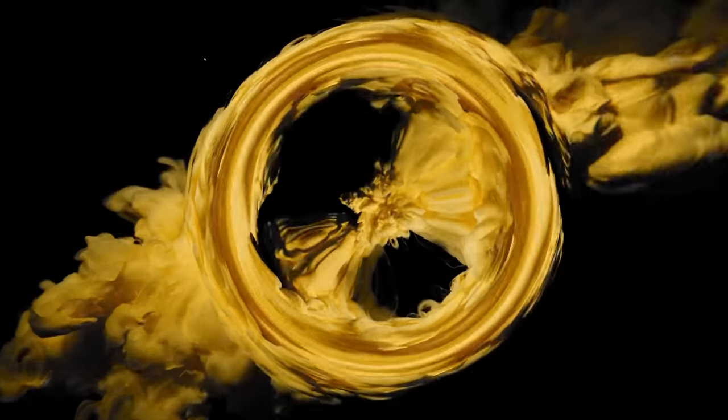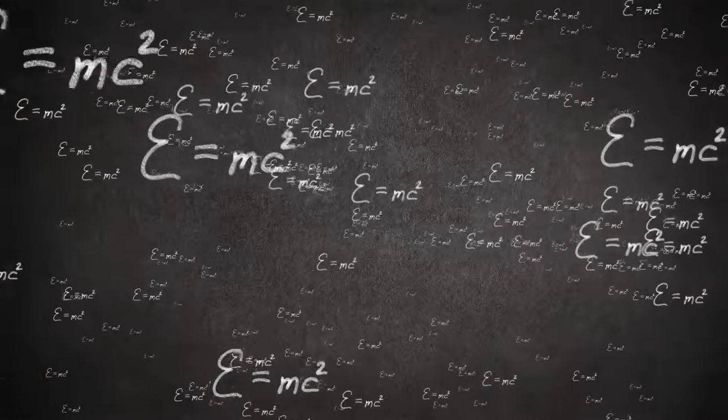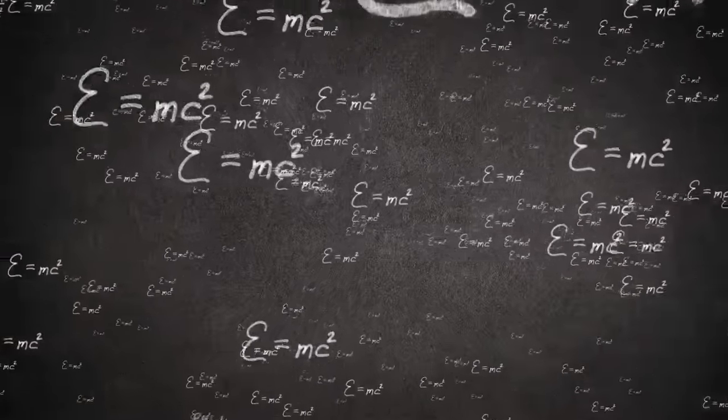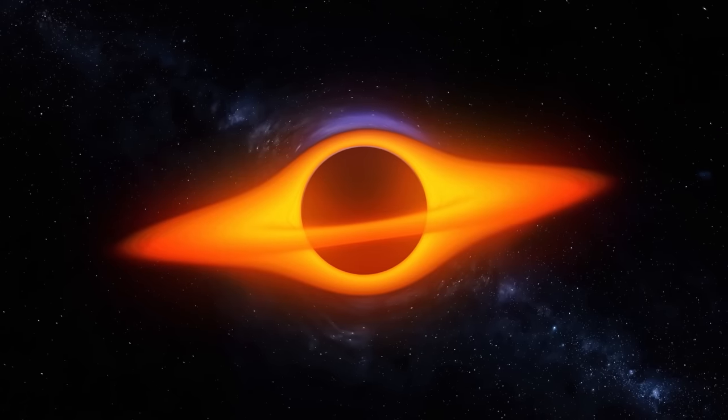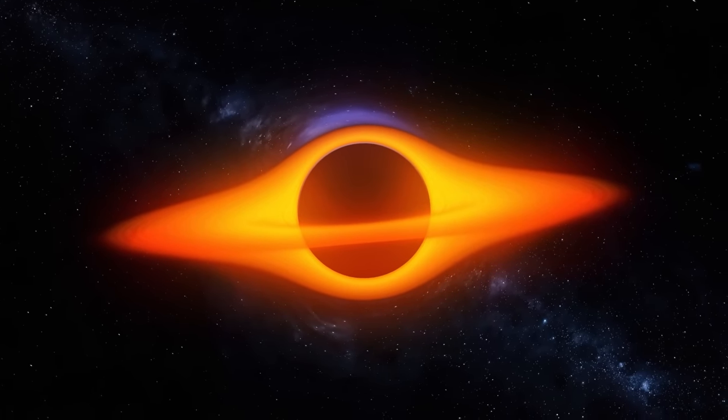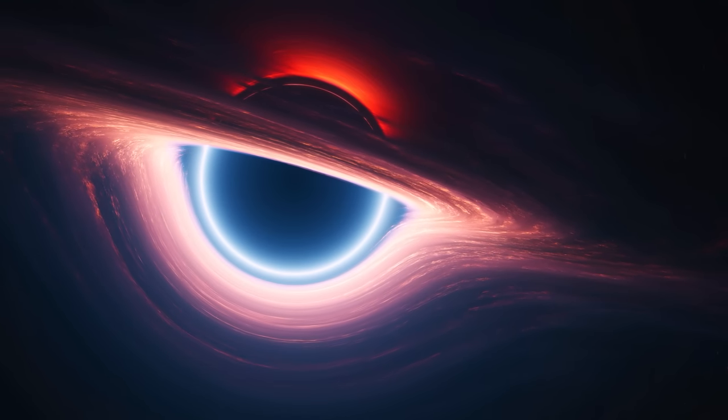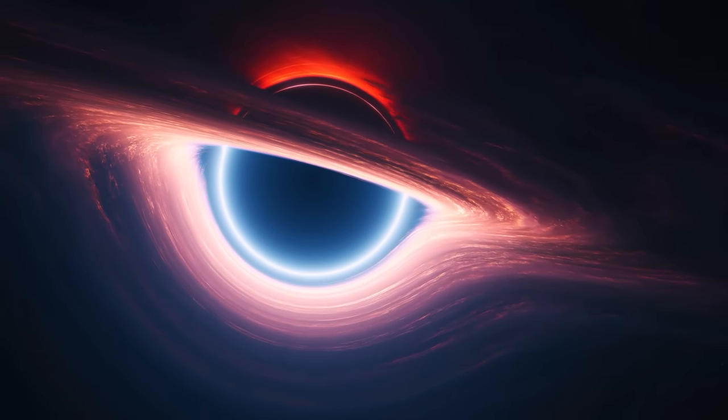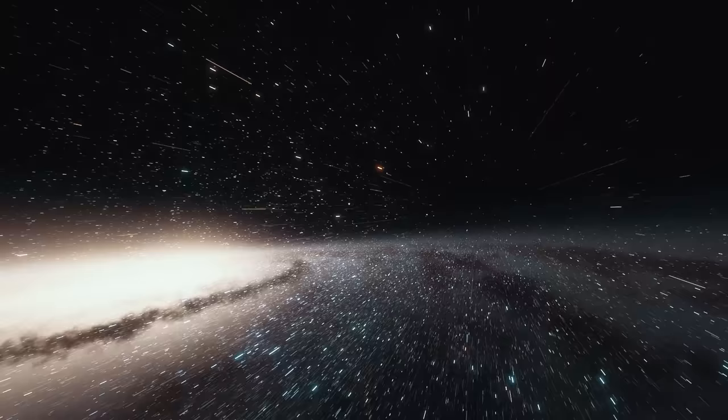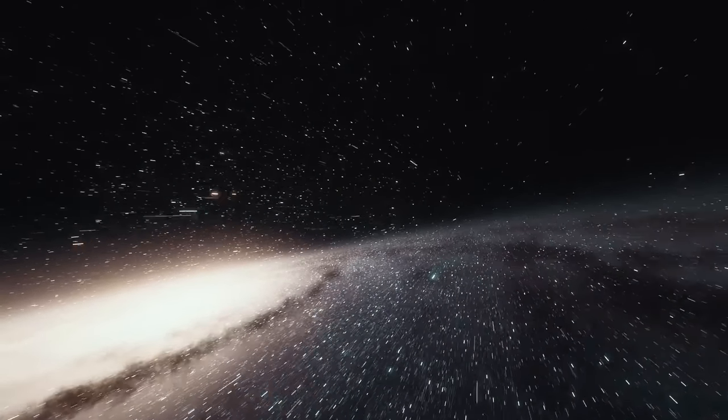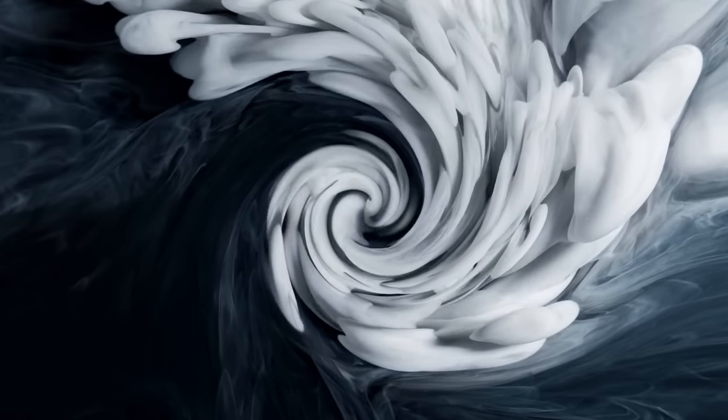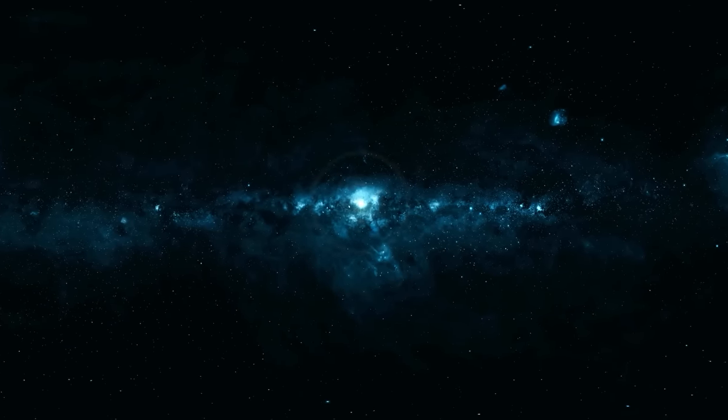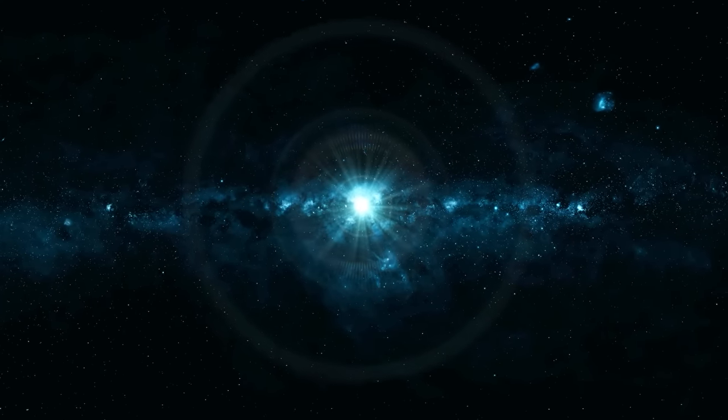These ripples, known as gravitational waves, were first theorized by Albert Einstein over a century ago, and were finally detected in 2015, marking a groundbreaking moment in our understanding of the universe. The eventual merger of these binary black holes is an event of unimaginable power. When they finally collide and become one, the resulting black hole has slightly less mass than the sum of the two original black holes. The missing mass is converted into energy and radiated out as gravitational waves. In some cases, this energy output can be equivalent to the combined light of all the stars in our galaxy.